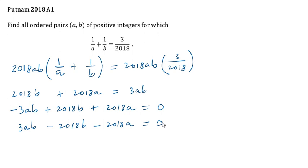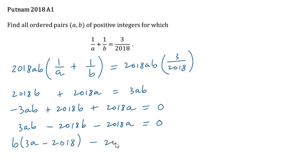Observe that we can factor out B in the first two terms. So if we factor out B, we get B(3A − 2018) − 2018A = 0.